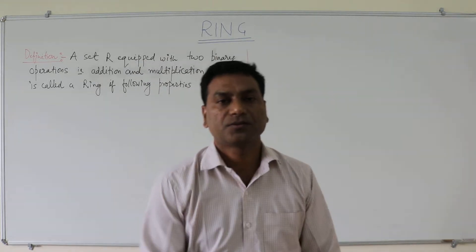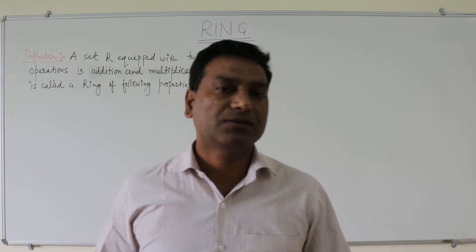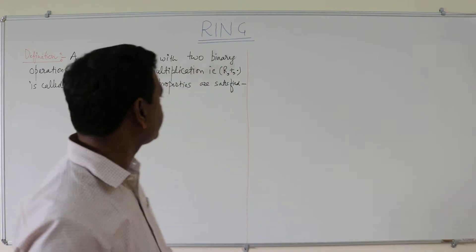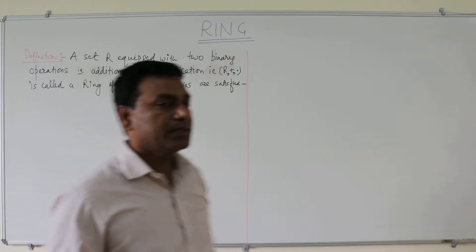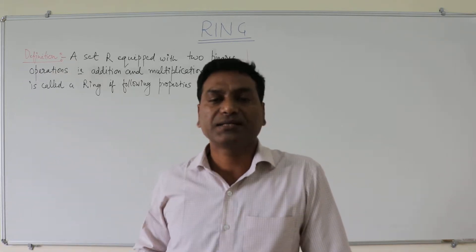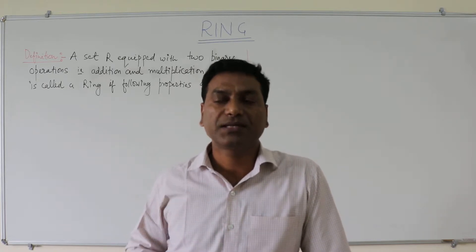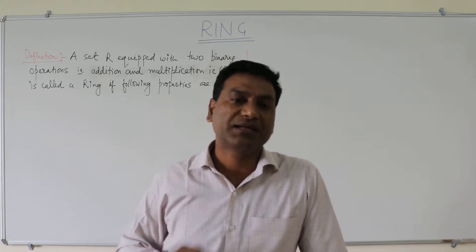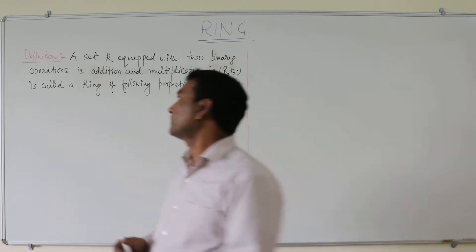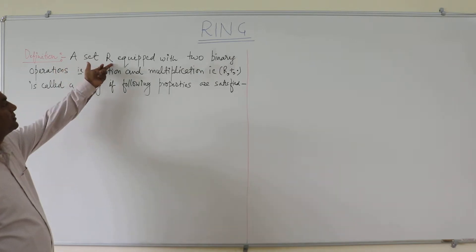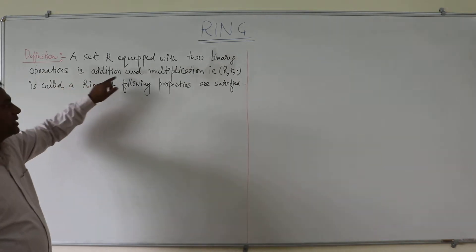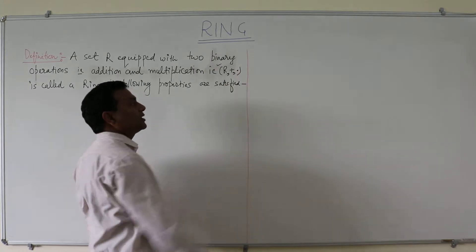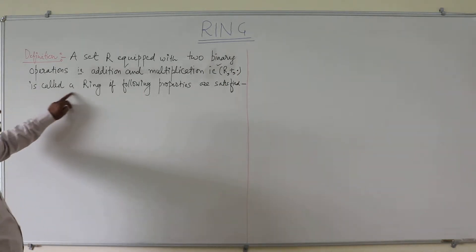Good evening to all of you students. Today I am going to explain about the ring. Ring is also an algebraic structure of group theory. Ring is nothing but a set that has certain properties. Earlier we studied that a group contains a single binary operation, but in a ring, this is a set that contains two binary operations — binary addition and binary multiplication. It can be defined as a set R equipped with two binary operations, addition and multiplication, written as the algebraic structure (R, +, ·).